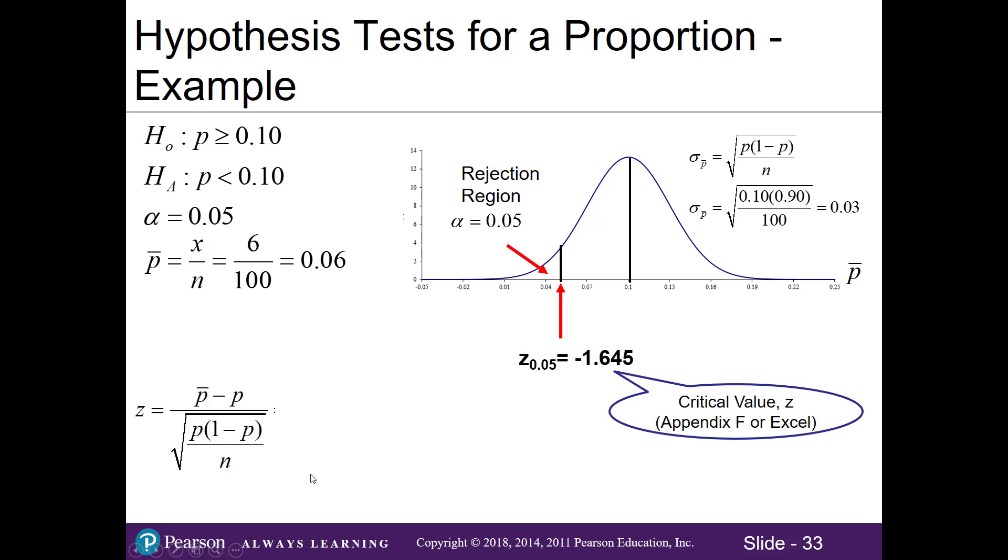We're going to have to plug in our sample proportion, our hypothesized value of the population proportion, and our standard error, which is based off of the population proportion as well. So plugging in all our numbers, there's my 0.06, my hypothesized 0.10, and I'm also going to put in my 0.10 in here, and 1 minus 0.10 gives me 0.9, my n of 100 that were sampled, and then solving for the top and solving for the bottom.